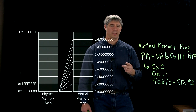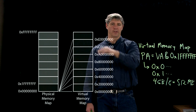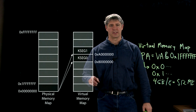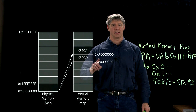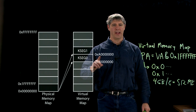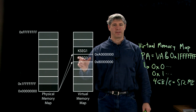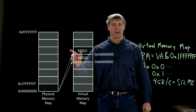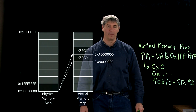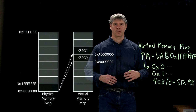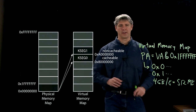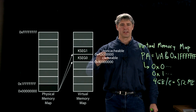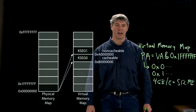On the PIC32, only two of these 512 megabyte segments are relevant: those that start with the hex character 8 and those that start with the hex character A. The first 512 megabyte segment is called kseg0, or kernel segment 0, and the other is called kernel segment 1. The significance is that virtual addresses in kseg0 are cacheable, and virtual addresses in kseg1 are non-cacheable.